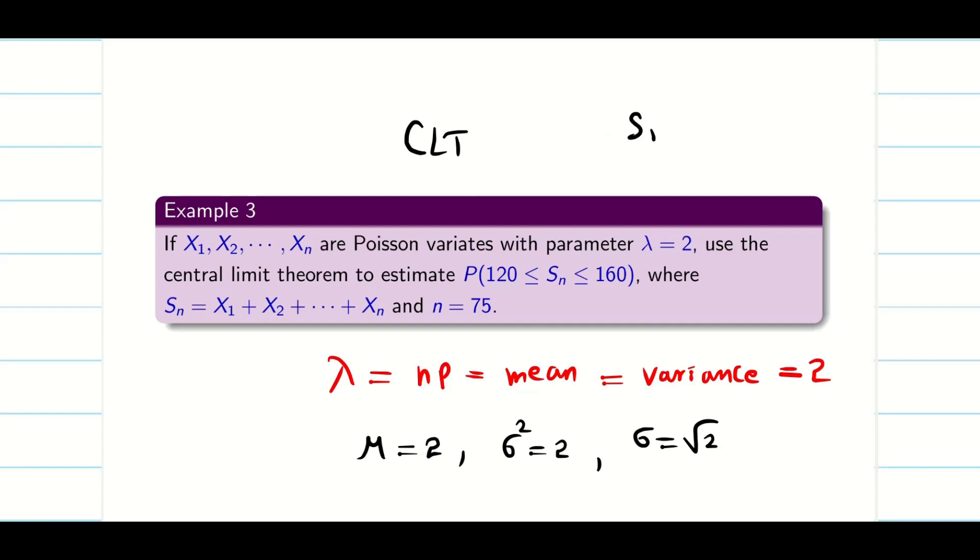In this problem, Sn is given. They are not asking you X̄, they are asking you Sn. Also, n is given, n is 75. All the data are given. Now we have to crack the problem using Sn. As I said in the previous video, either they will ask X̄, if the problem is on X̄, we have to use this one. If the problem is on Sn, we have to use the formula n mu by sigma root n.